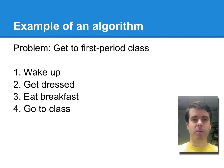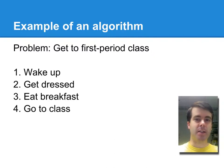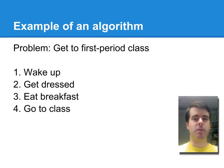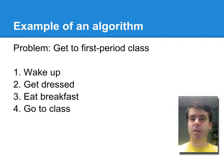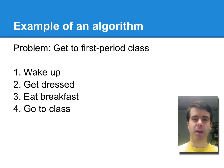Here's an example of a very simple algorithm that you all have hopefully been able to accomplish, which is how to get to class. One of the things you'll notice is that you can write an algorithm at a lot of different levels of specificity, levels of detail. Every algorithm needs to be a complete set of instructions from beginning to end, no matter how detailed it is. This is a pretty high level algorithm with just four steps that are not very specific.